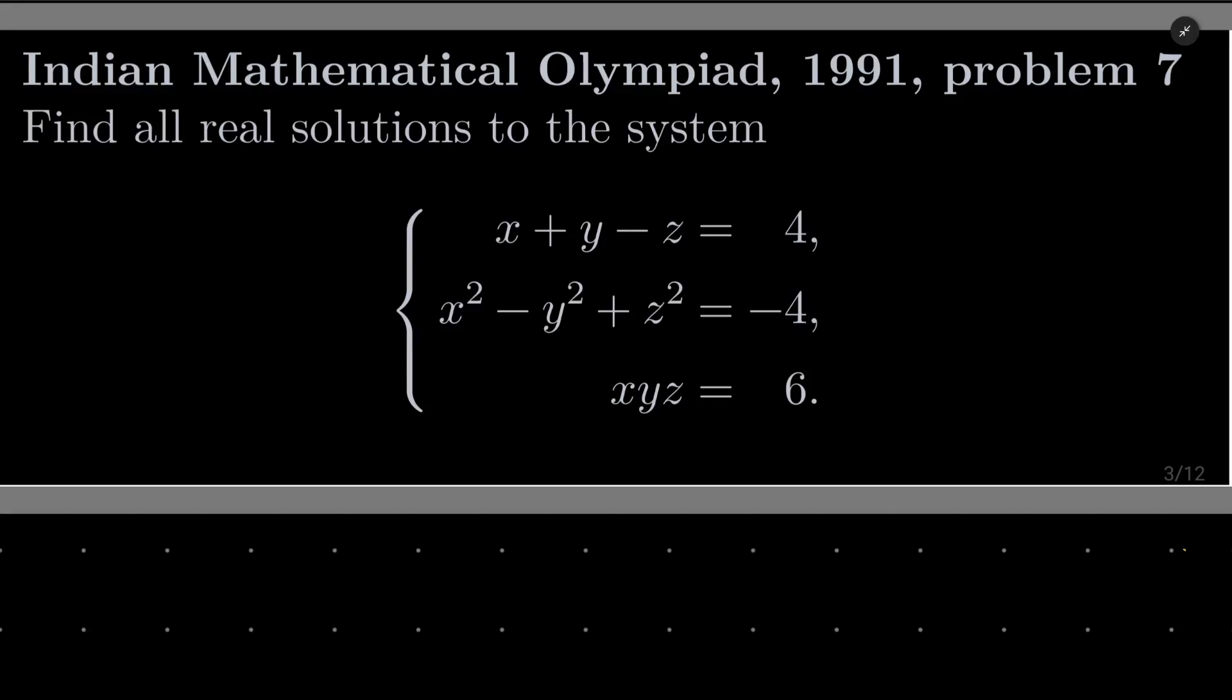Hello friends, in this video I'd like to solve the following problem from the Indian Mathematical Olympiad 1991, problem number 7. We want to find all the real solutions to the following system of equations: x plus y minus z equals 4, x squared minus y squared plus z squared equals minus 4, and xyz equals 6.